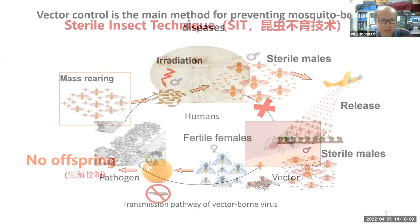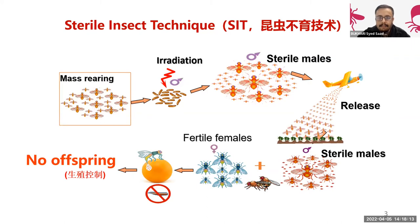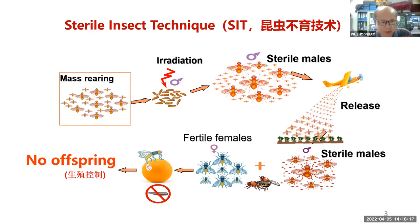We need to develop new ways to control the mosquito and stop the transmission of some diseases, especially Aedes-transmitted diseases including dengue, Zika, yellow fever, and others.